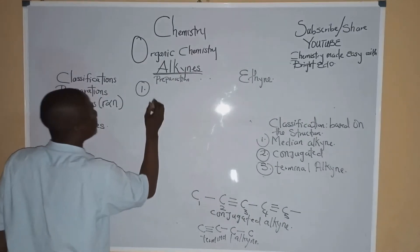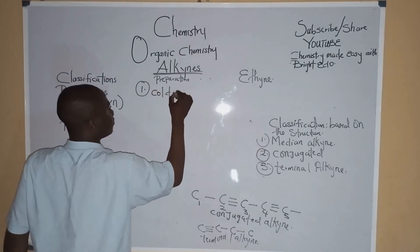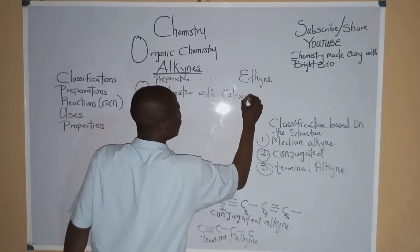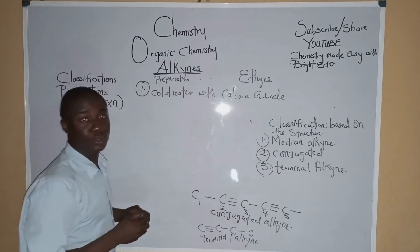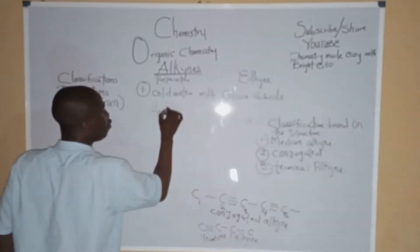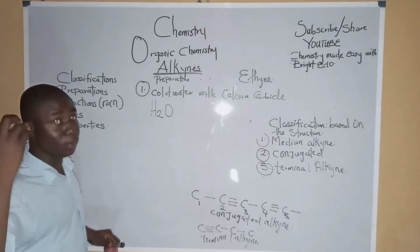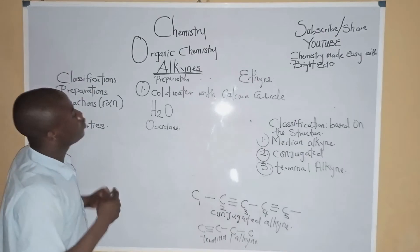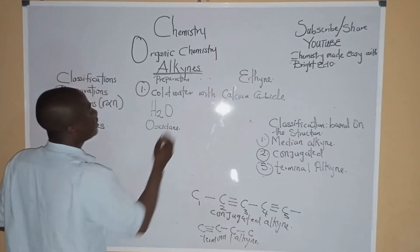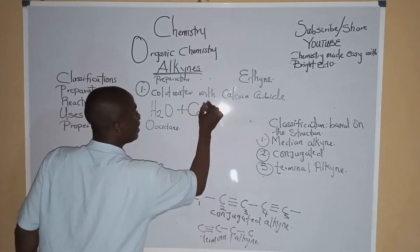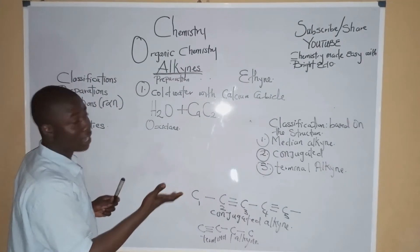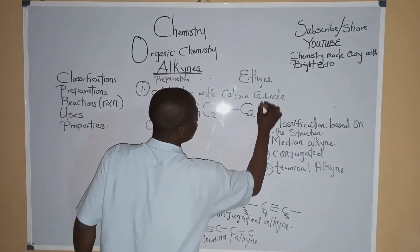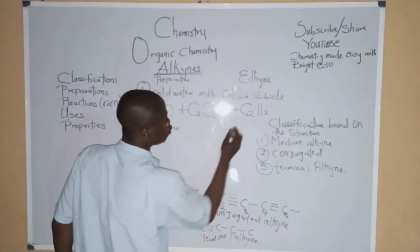Acetylene is prepared by reacting cold water with calcium carbide. Water, which is H2O — also called oxidane — reacts with calcium carbide (CaC2). The chemical formula of calcium carbide is CaC2. The product we get is C2H2, which is called acetylene.